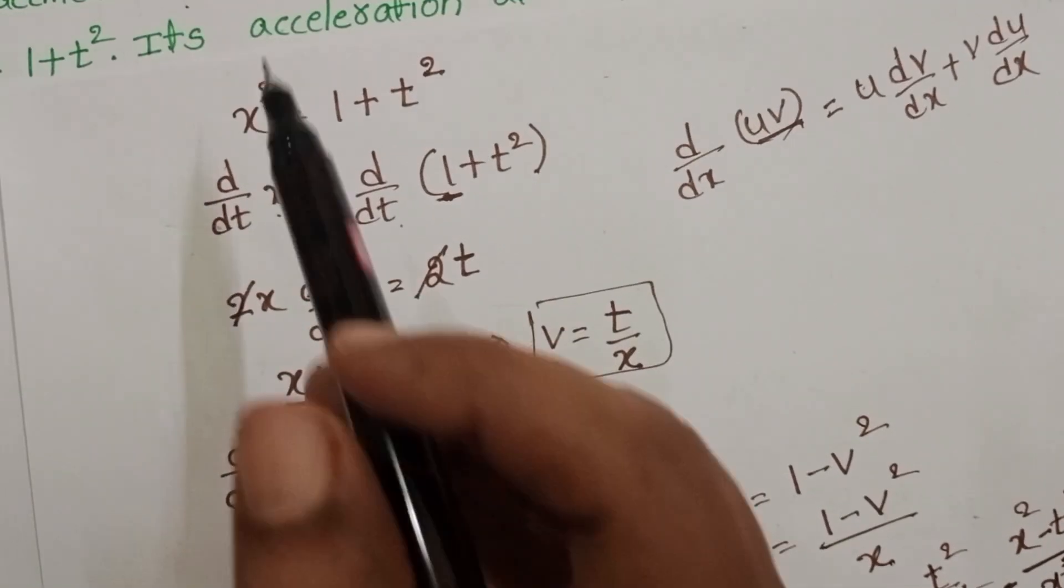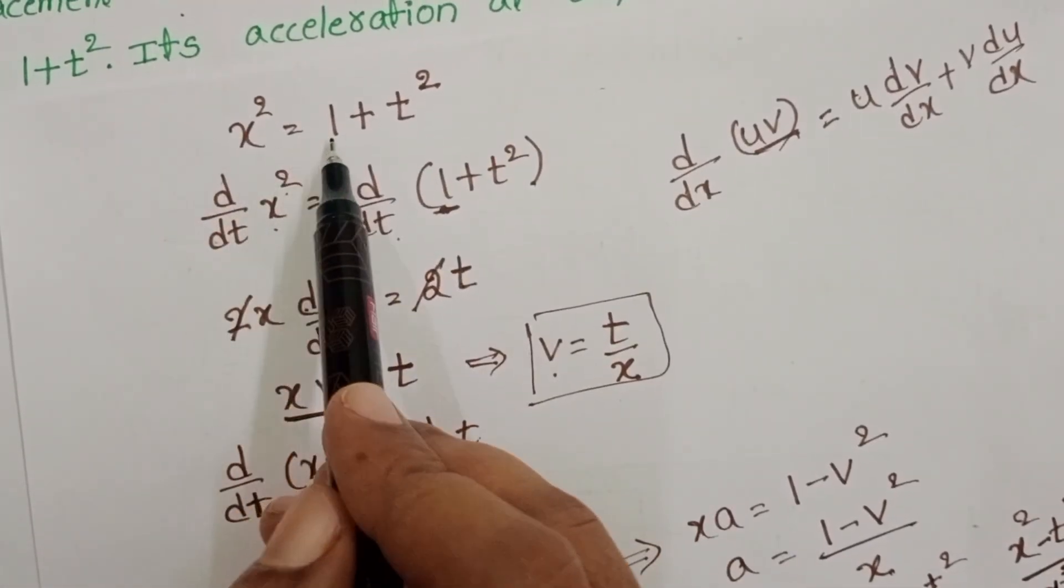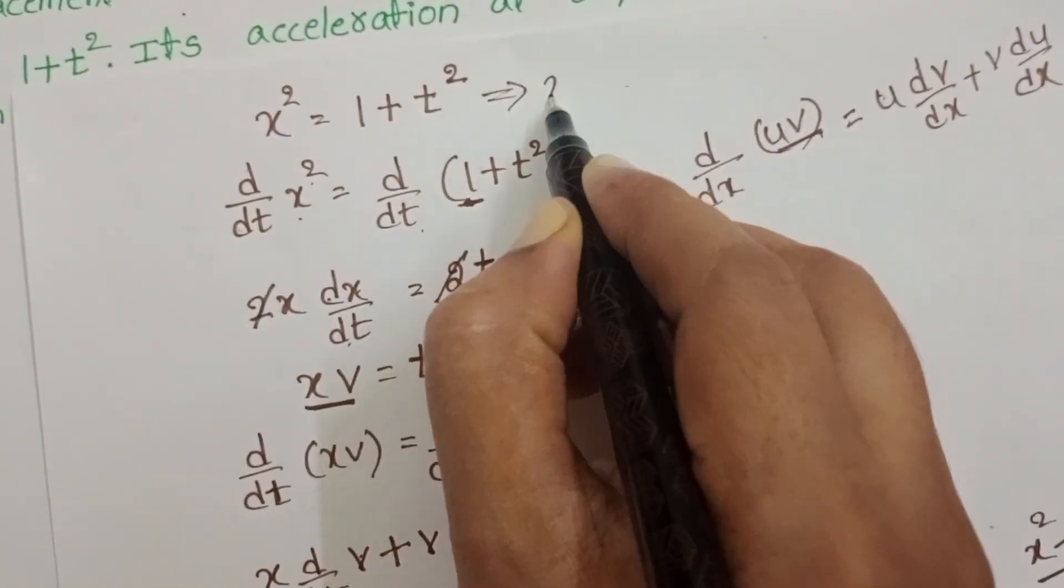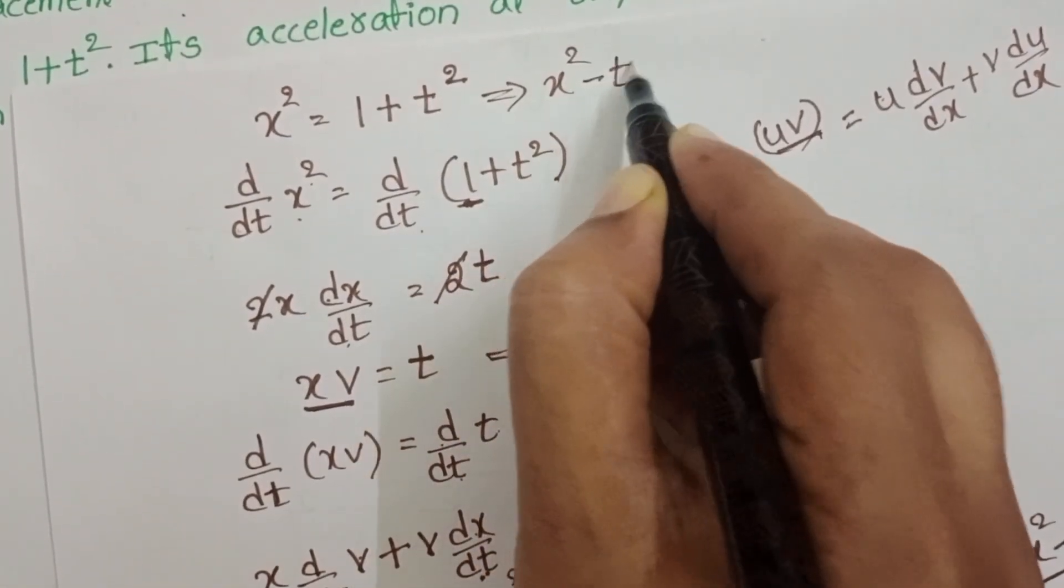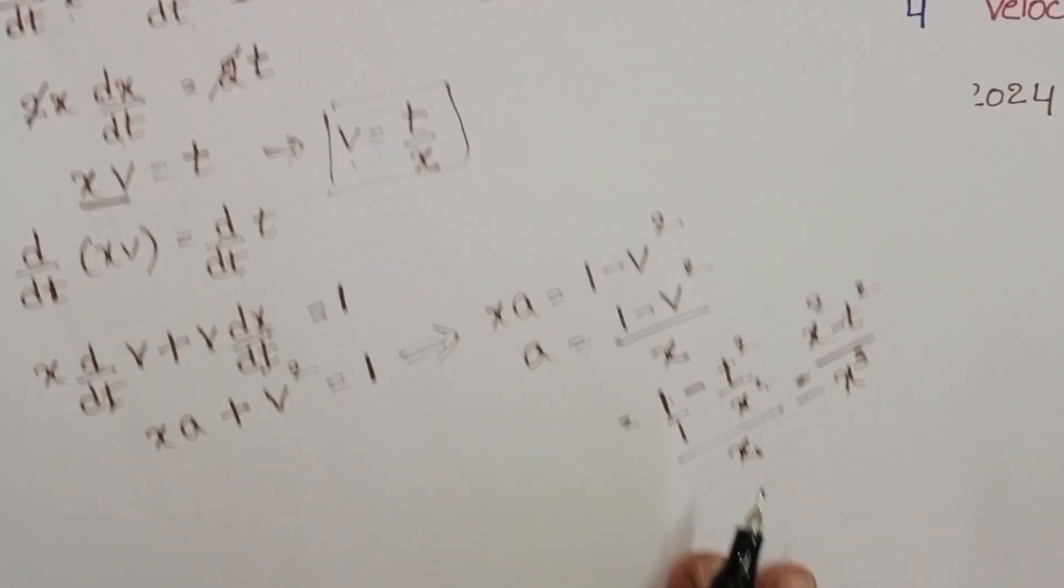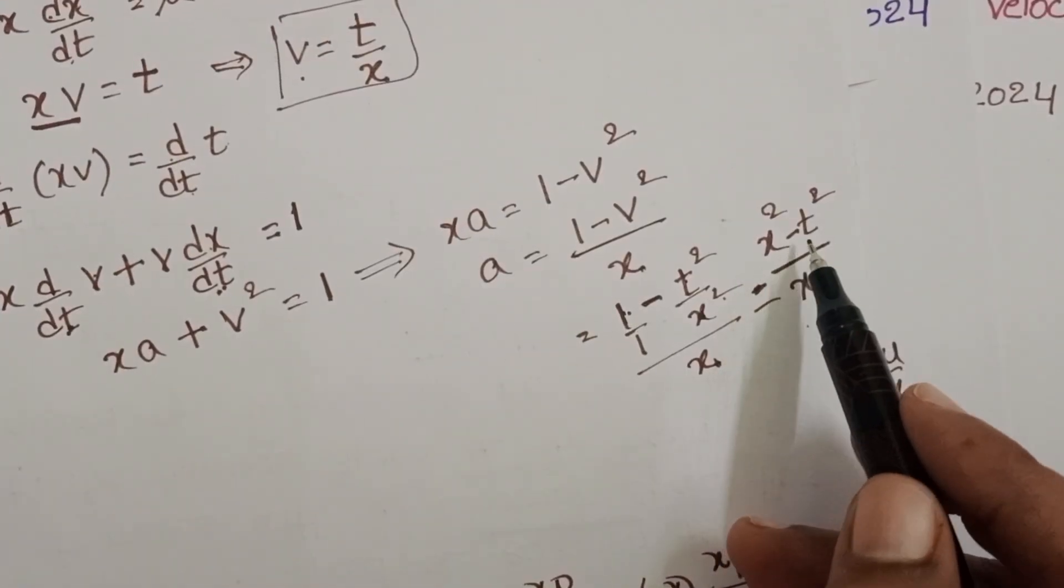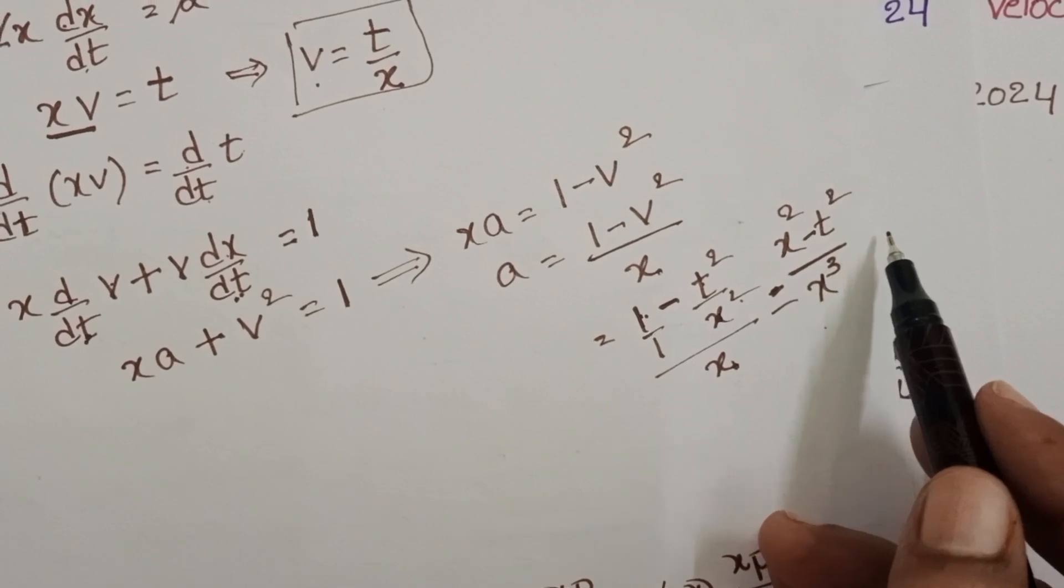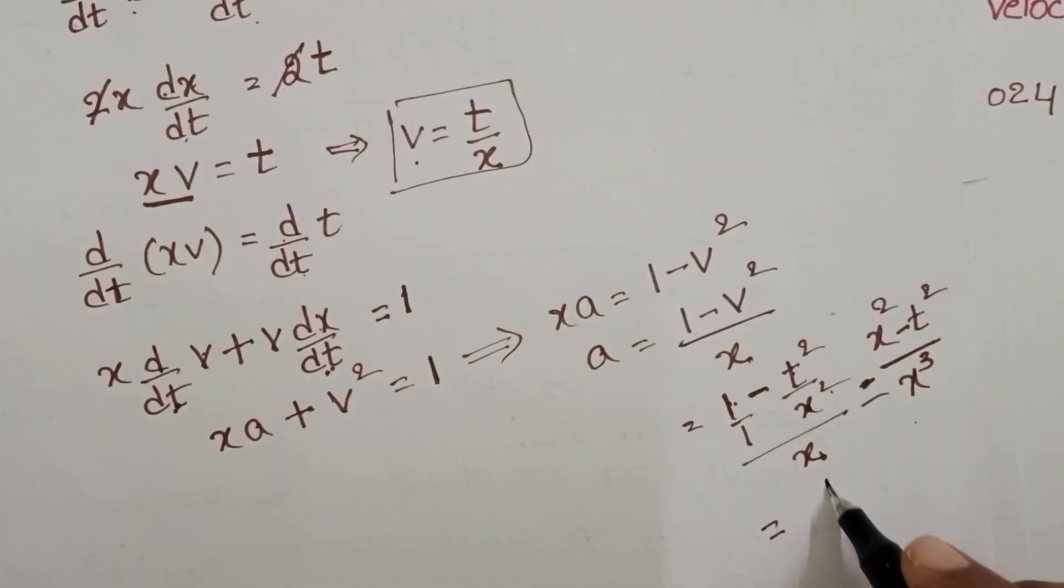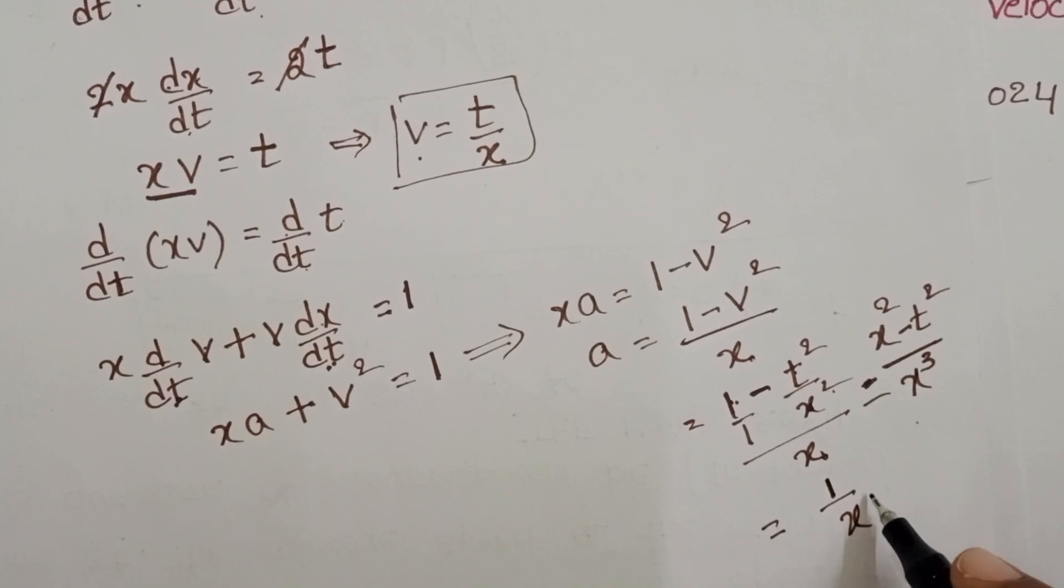Once check the first equation. Here we know x² = 1 + t². From this, x² - t² = 1. So now here x² - t² term is there. In this place substitute 1. 1/x³. This x³ goes to numerator, it becomes x^(-3).